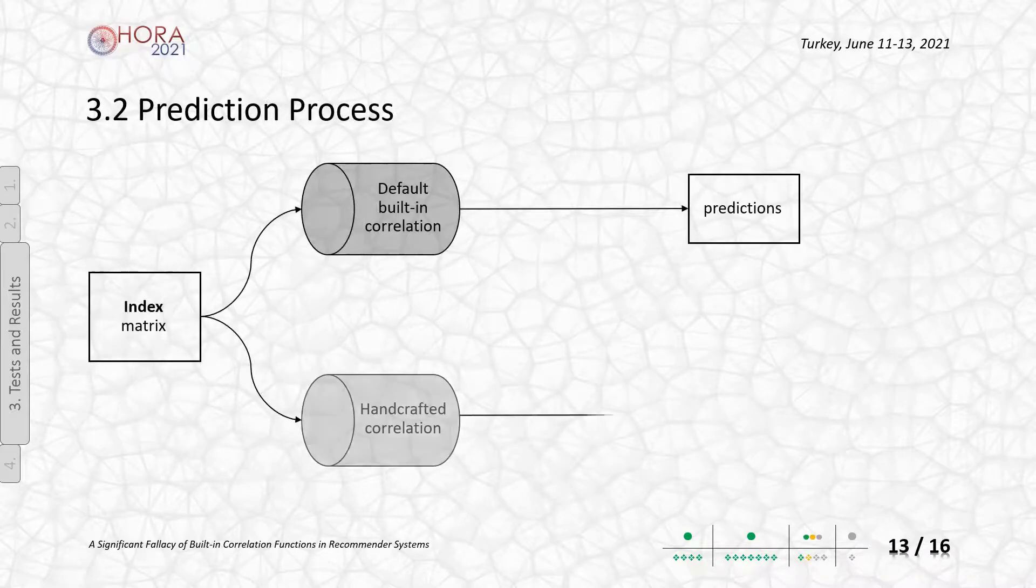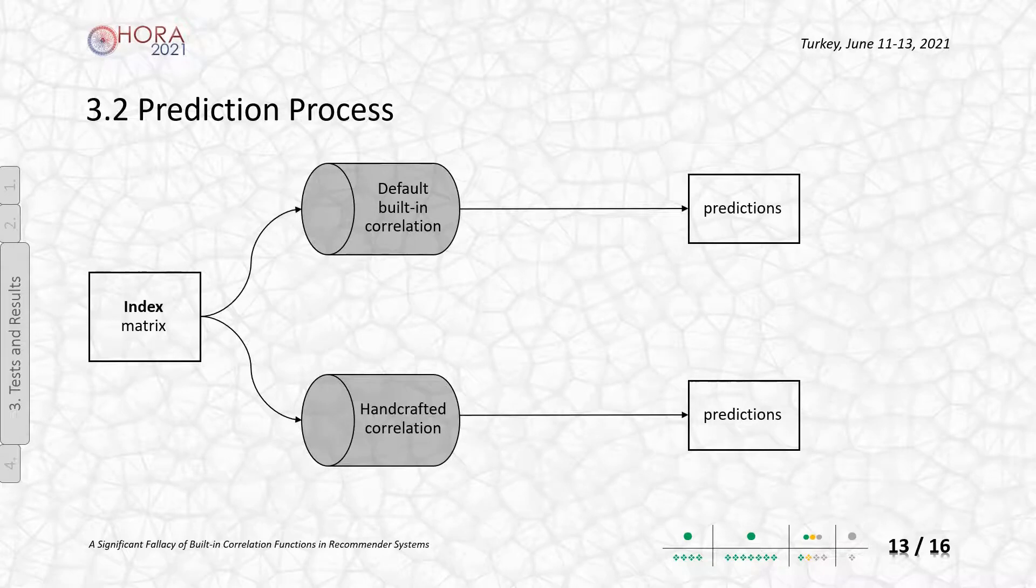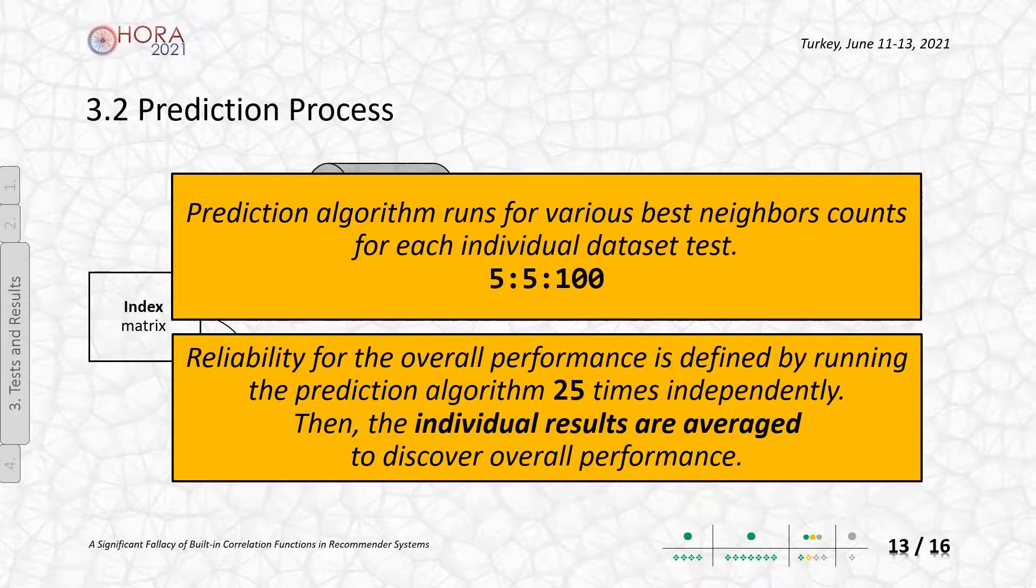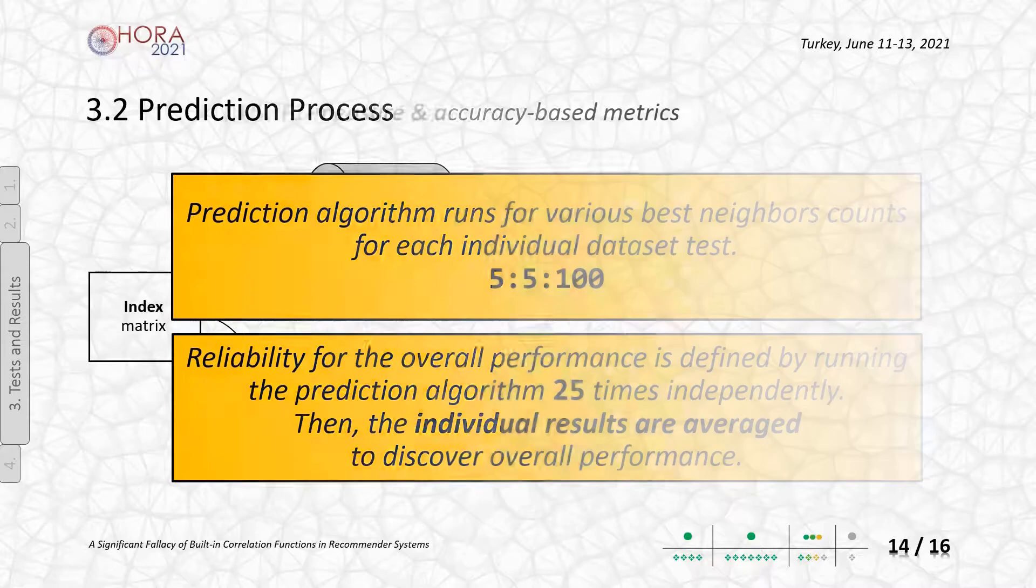During tests, the default built-in correlation and handcrafted ones are employed in a comparative manner. Neighborhood selection, also known as the top-end decision, is done parametrically from five to a hundred with five incremental steps. That is a fine-tuned way. For reliability purposes, each individual test attempt is done 25 times, considering the randomization of test item selection. Thus, we can say that a tunable fashion is obtained.